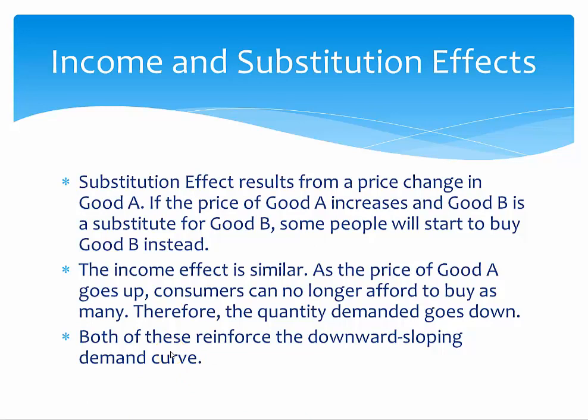The next topic is the income and substitution effects. The substitution effect results from a price change in good A. If the price of good A increases and good B is a substitute, some people will start to buy good B instead — if good A is too expensive, you'll just buy good B. The income effect is similar: as the price of good A goes up, consumers can no longer buy as much of it, so the quantity demanded of good A decreases. Both of these are just reinforcements for the downward-sloping demand curve. That's all you need to know for this chapter. Thank you for watching.